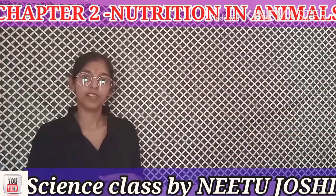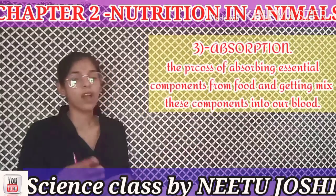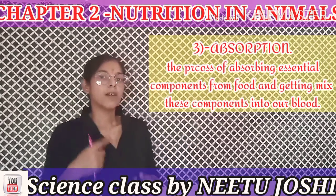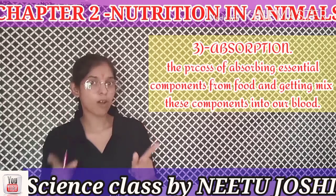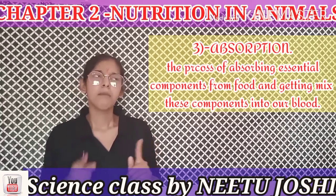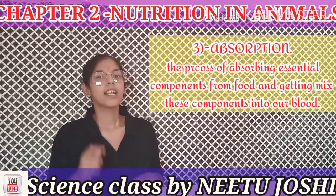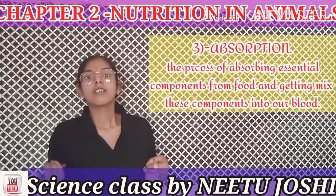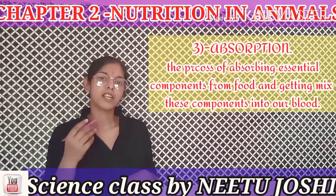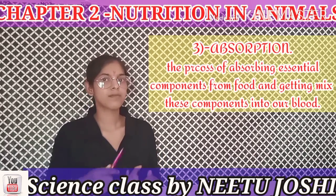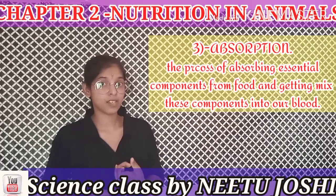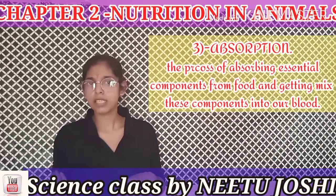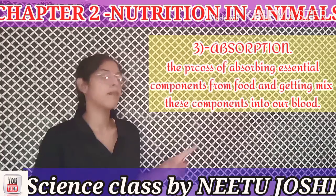The third stage is absorption. What is absorption? It is the process by which food present in the small intestine is broken down by chemical processes to separate essential components like glucose, fat, and carbohydrates, and these components are then mixed into the blood.